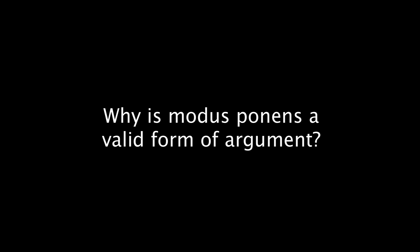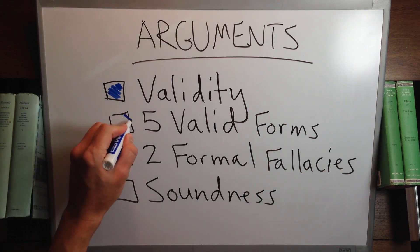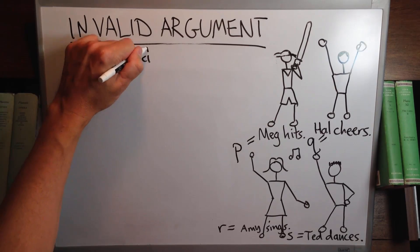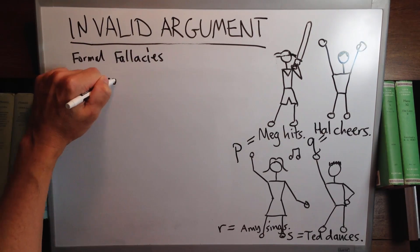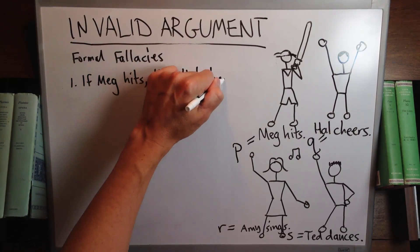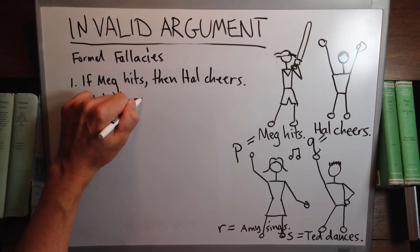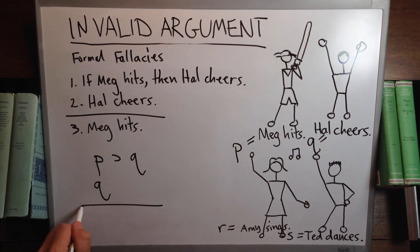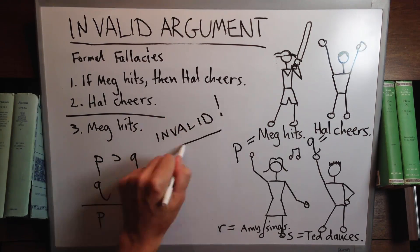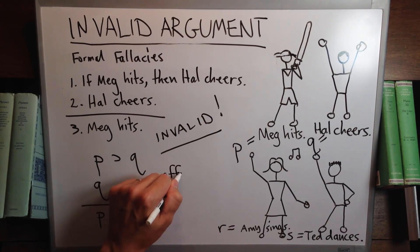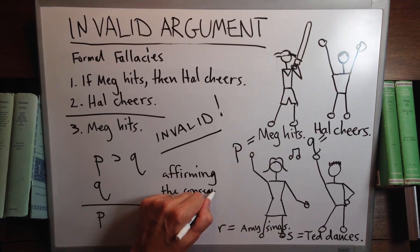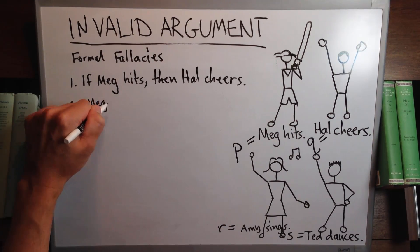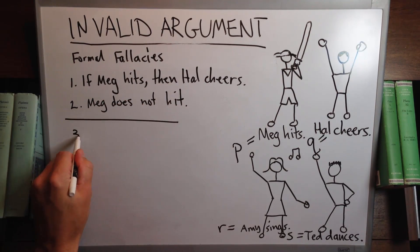Modus ponens is a valid form because it asserts a sufficient condition for the consequent. Now let's look at two invalid forms of argument — these are called formal fallacies. If Meg hits then Hal cheers — if I then say 'Hal cheers,' can I infer that Meg hits? No, I cannot, not validly. This is called the fallacy of affirming the consequent. Q is a necessary condition for P; asserting it is not sufficient to infer P, the antecedent.